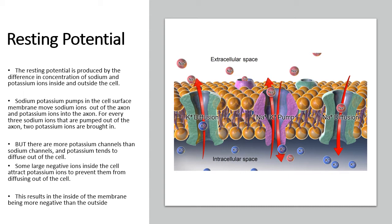Resting potential is not produced by accident. It's due to the difference in sodium and potassium ions inside and outside the cell. The sodium-potassium pump uses energy and pumps ions from low to high concentration. It pumps sodium ions out of the axon — for every three sodium ions pumped out, two potassium ions are pumped in. So there is a sodium ion on its way out and a potassium ion on its way in: three sodium ions out, two potassium ions in.